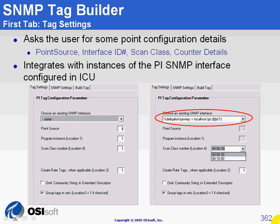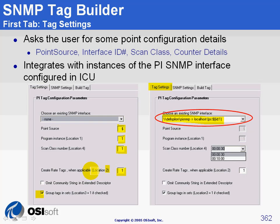Let's get back to the plugin. Here we are — the first tab in our SNMP Tag Configurator. You have to choose your interface as configured in ICU, or manually set the point source, the interface ID number, and the scan class. There are two more options here: location 2 — when applicable, the plugin will set location 2 to 1 to create rate tags — and location 3 equals 1.